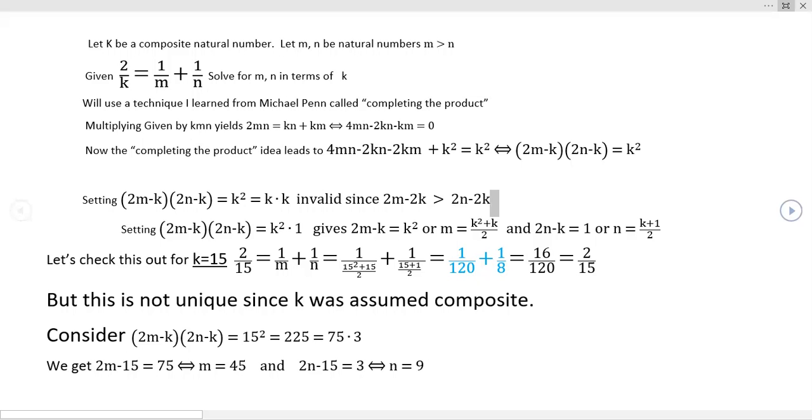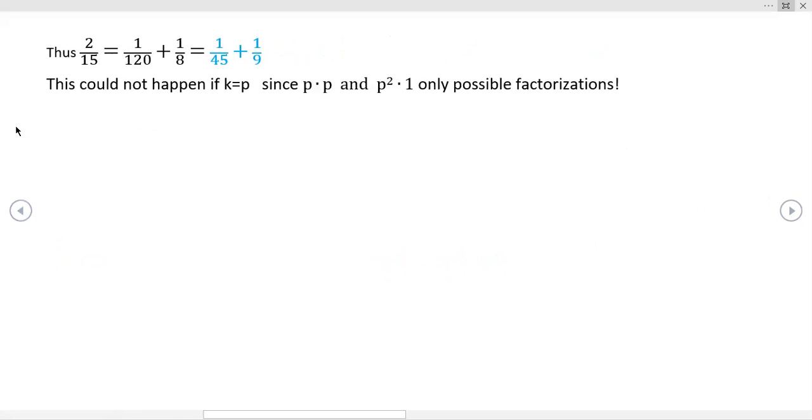I apologize, I couldn't get that on one screen, but I want it to be big enough. So again, you get 2 over 15 is equal to two different representations as the sum of what you, I guess you can call it a unit reciprocal or a unit fraction.